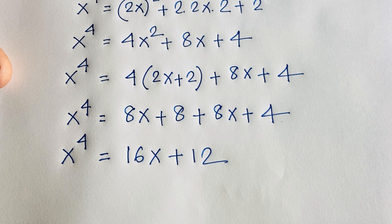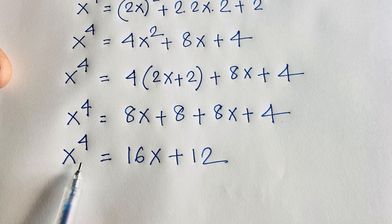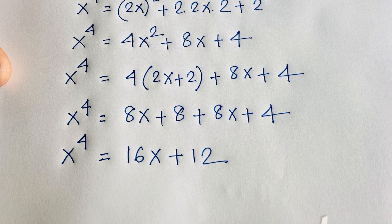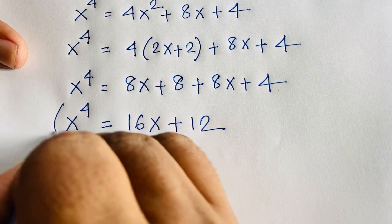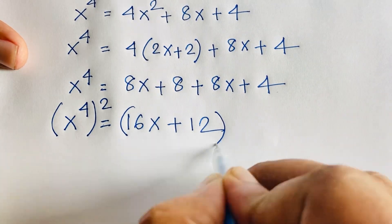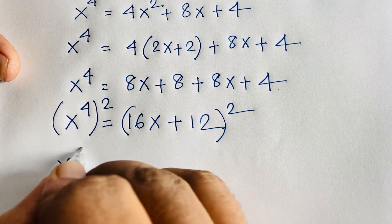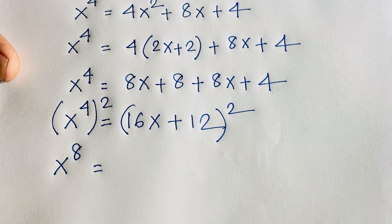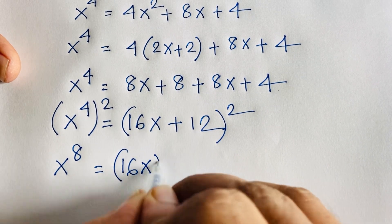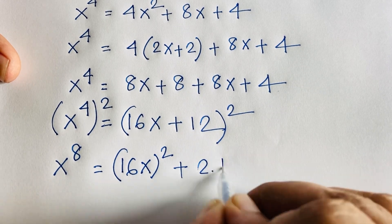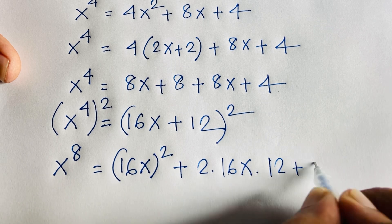We need x^10, but so far we have x⁴ = 16x + 12. We square both sides again to find x⁸. Using (a + b)² = a² + 2ab + b², we get x⁸ = (16x)² + 2·(16x)·12 + 12² = 256x² + 384x + 144.